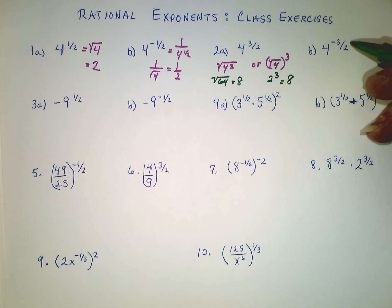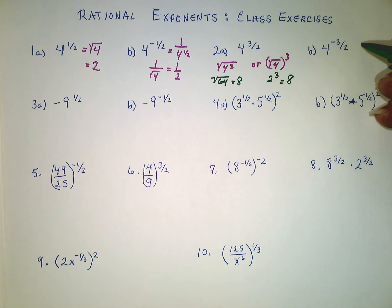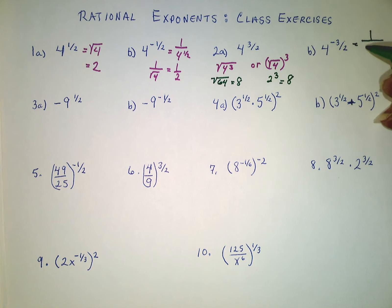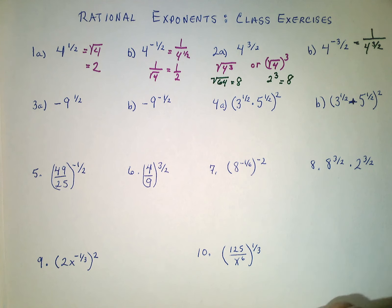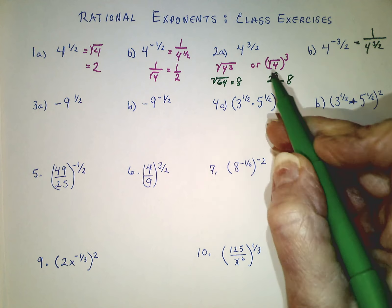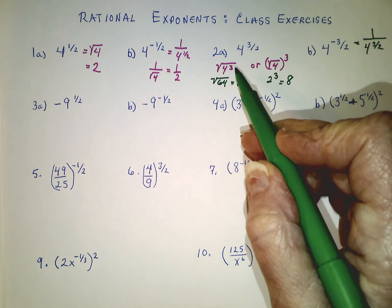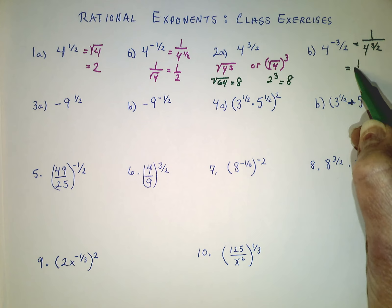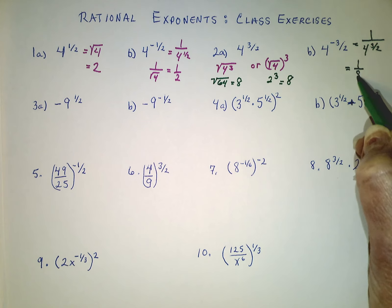For part B, this says 4 to the negative 3 halves. That's the reciprocal, so that's 4 to the 3 halves in the denominator. We already found out that 4 to the 3 halves is 8, so this would have to equal 1 over 8.